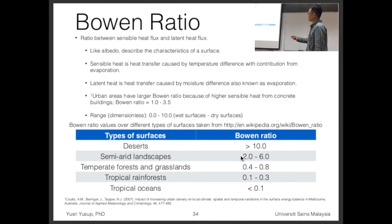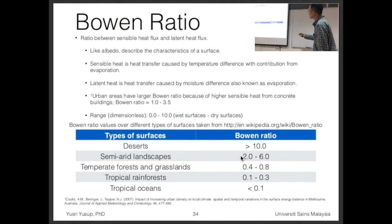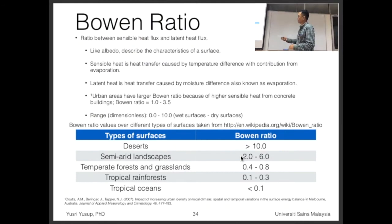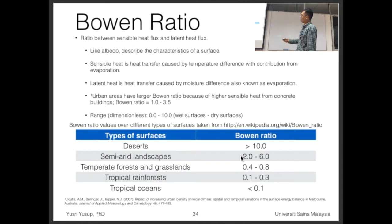Sensible heat is heat transfer caused by temperature difference, without contribution from evaporation — it's essentially dry heat. There's another form called latent heat, which is heat transfer caused by moisture difference, also known as evaporation. These are the two main types of heat.